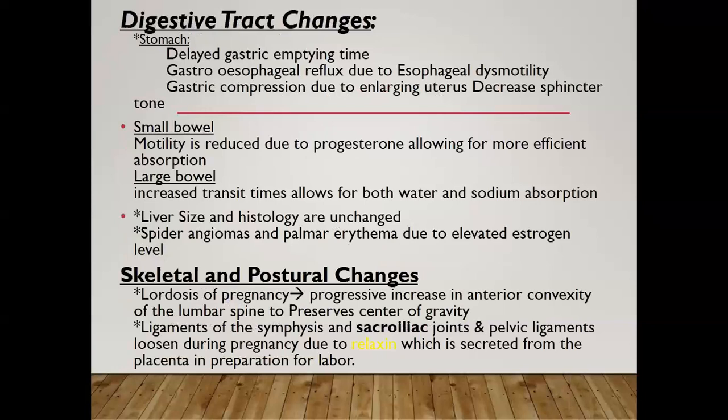In the digestive system, regarding the stomach, there is relaxation of the stomach muscle wall, causing a delay in the gastric emptying time. Women usually feel satiation, nausea, vomiting, and delayed digestion of food, along with gastroesophageal reflux due to esophageal dysmotility and relaxation of the esophageal-gastric sphincter. Gastric compression from the enlarging uterus further decreases the sphincter tone.